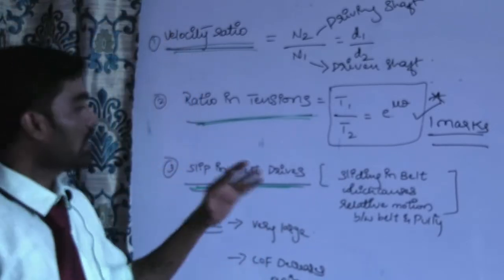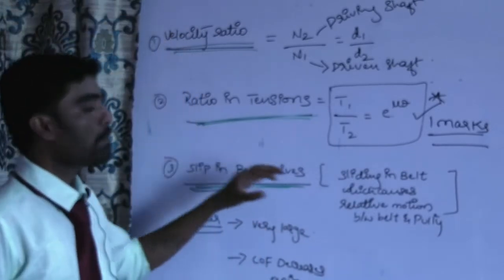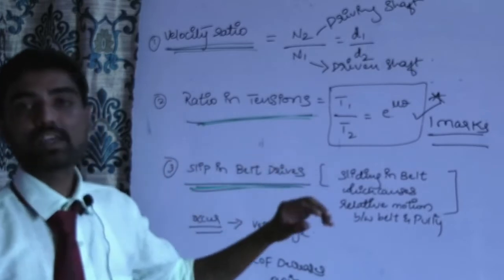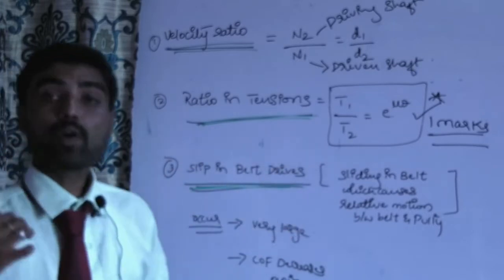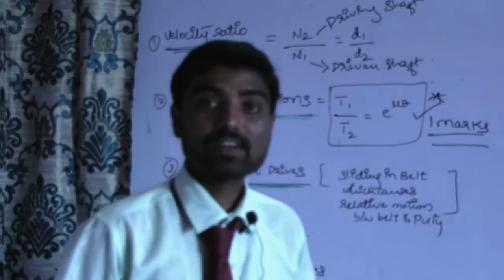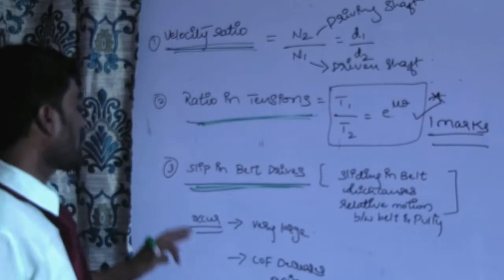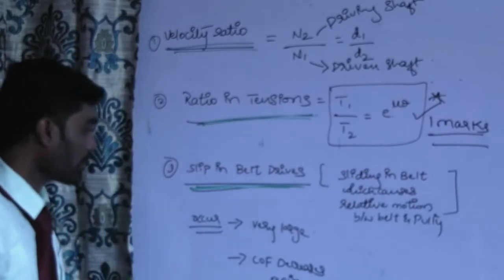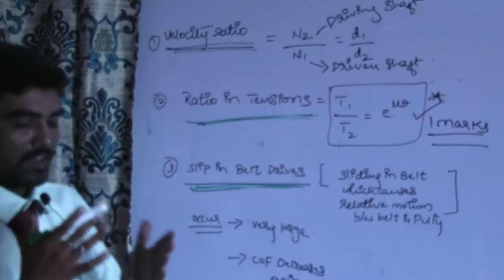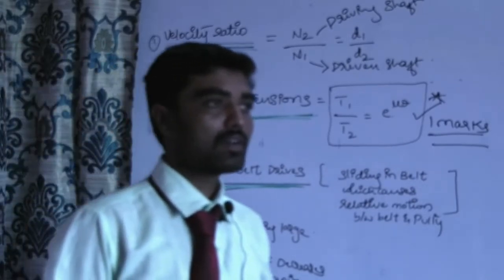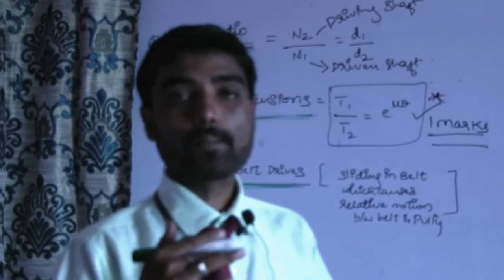Sliding in the belt causes relative motion between the belt and the pulley. This part is called slip. Slip occurs due to the difference between the pulleys and belt.